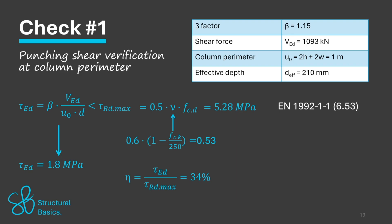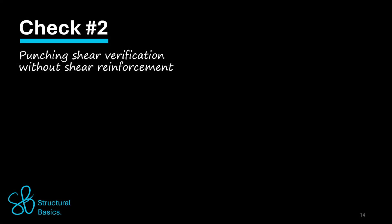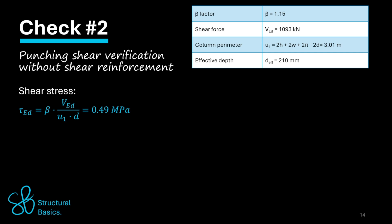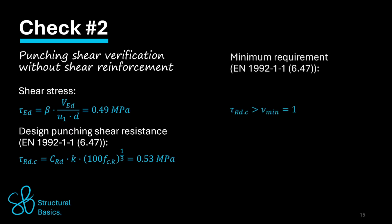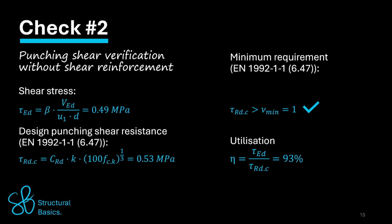Next, we check if punching shear verifies without shear reinforcement. The shear stress at the control perimeter u1 is calculated as 0.49 MPa. The punching shear resistance is calculated as 0.53 MPa. Eurocode 2 formula 6.47 requires checking that the design punching shear resistance is greater than the minimum, which also verifies. Finally, checking that the punching shear resistance is greater than the punching shear stress gives a utilization of 93%, meaning punching shear verifies for the flat slab without shear reinforcement.